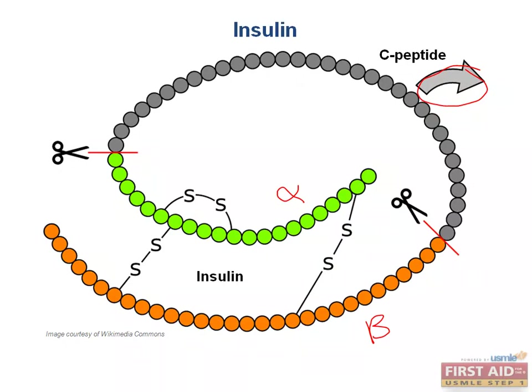The reason why we have to know how insulin is made is because there is an important clinical correlate that you will be tested on. When we make insulin in the body, both insulin and C-peptide are eventually released into the bloodstream. However, synthetic insulin — the pharmaceutical version — does not contain C-peptide.